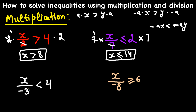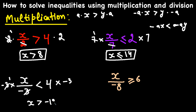For number 3, X is divided by negative 3. If I just multiply by 3, I'd get negative X on the left — but I only want X. So I need to multiply by negative 3 on both sides. Whenever we multiply by a negative number, we reverse the inequality. So 3 times 1 is 3, and our inequality becomes X greater than negative 12.